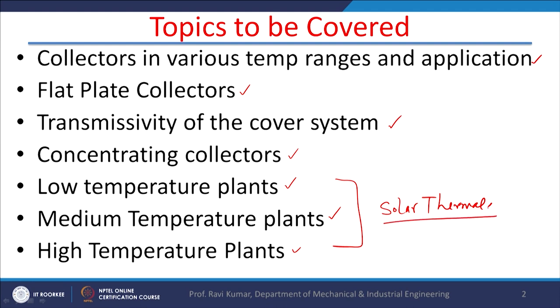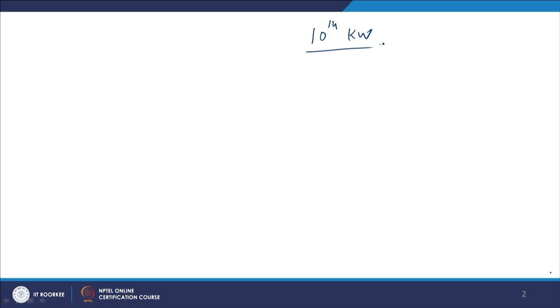Solar energy is a non-conventional type of energy system, but it is becoming very popular day by day. The Earth receives around 10 to the power 14 kilowatts of energy from the sun, and when it reaches the Earth's surface it is around 1000 watts or 1 kilowatt per meter square.